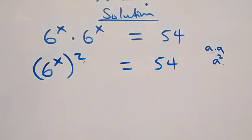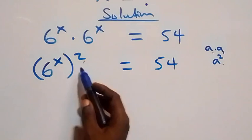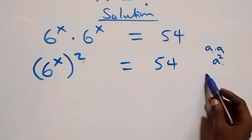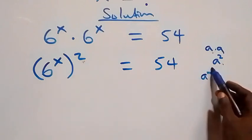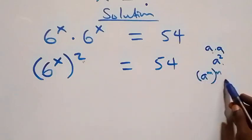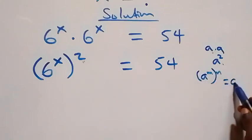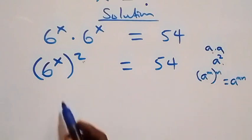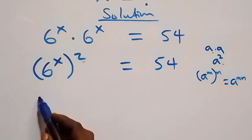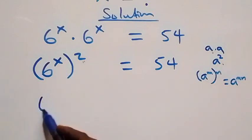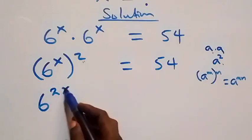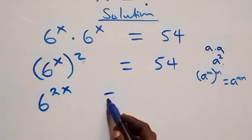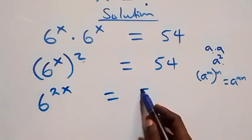From here, when we have a raised to power m, raised to power n, it is the same thing as a raised to power m times n — that is, the powers multiply. So we have six raised to power 2x equals to fifty-four.